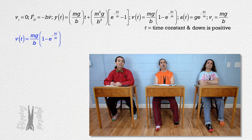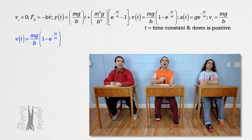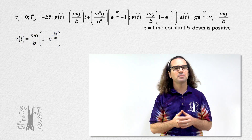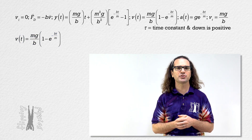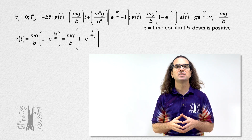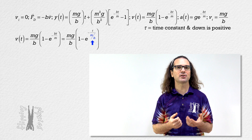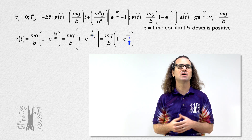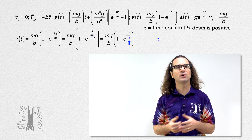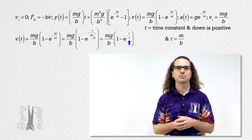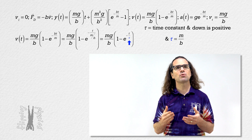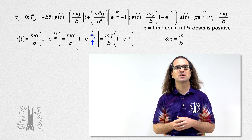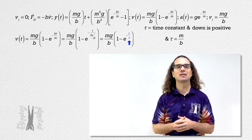Velocity as a function of time equals mass times acceleration due to gravity divided by the proportionality constant, times the quantity 1 minus e to the power negative proportionality constant times time over mass. The way we determine the time constant in this equation is by rearranging the velocity equation slightly to get mass over proportionality constant in the denominator of the exponent. We can replace mass over proportionality constant with the time constant tau, because in this situation, the time constant tau equals mass over the proportionality constant.